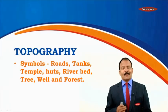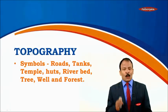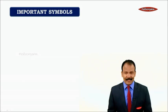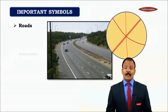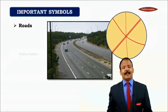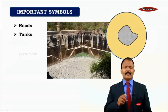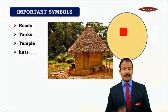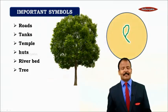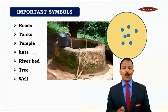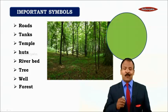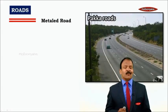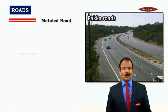In this part we shall learn some important symbols, starting with roads, tanks, temple, huts, riverbeds, trees, wells, and forest. Roads are shown in red color lines. Rajasthan has plenty of dry tanks. Coming to different types of roads, the first one is metal road.